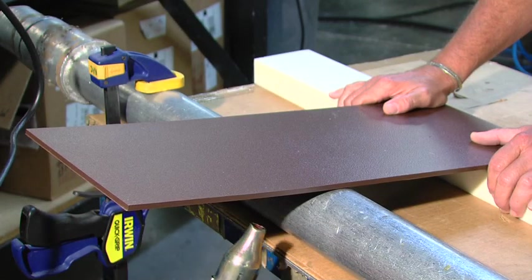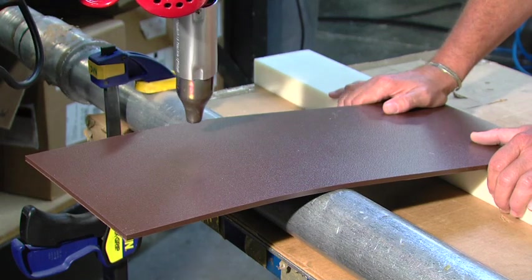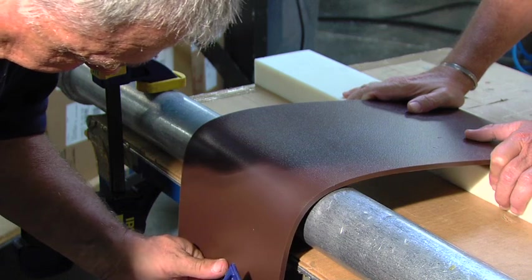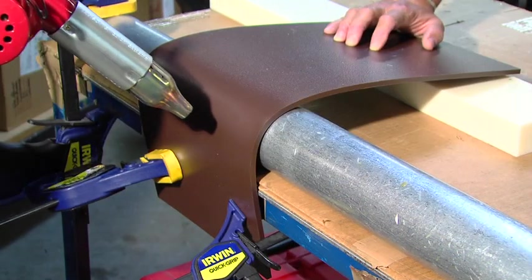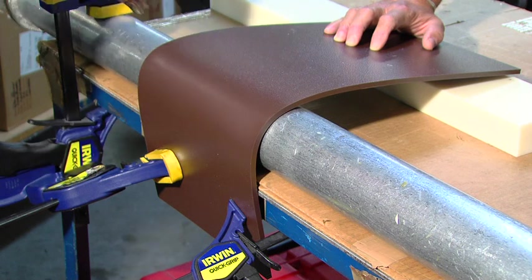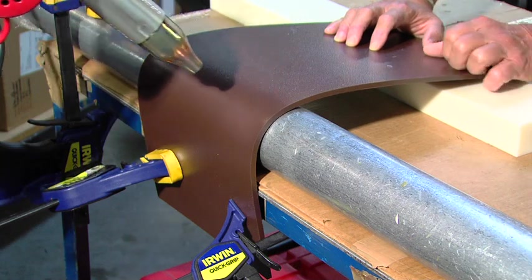Forming a radius can also be done by using a heat gun. Use a back and forth motion across the length of the sheet, both top and bottom, until the Starboard ST is soft enough to start bending. Do not get the heat too close to the material, as blistering may occur. And be aware, the thicker the material, the longer it will take to form a desired radius.